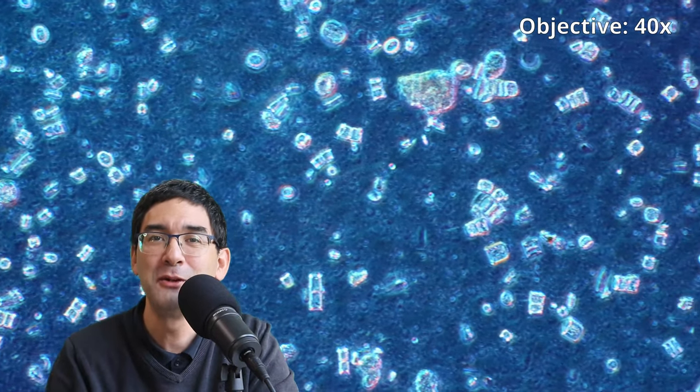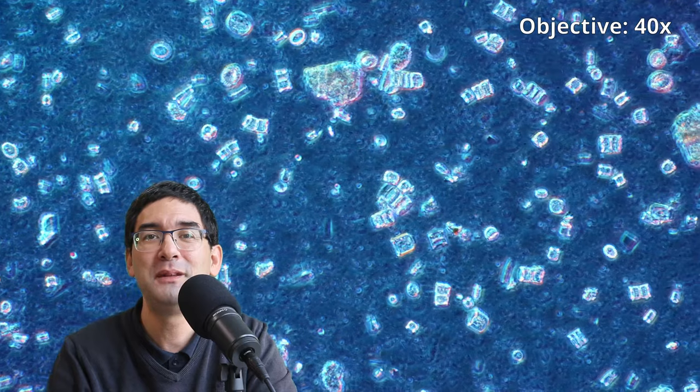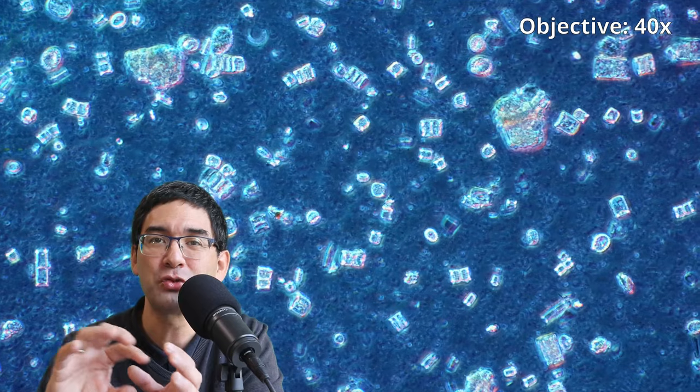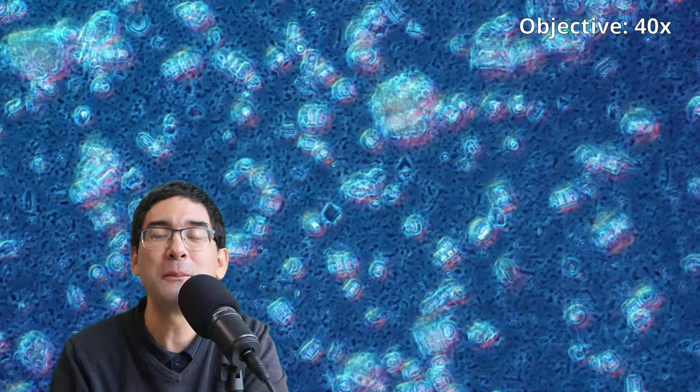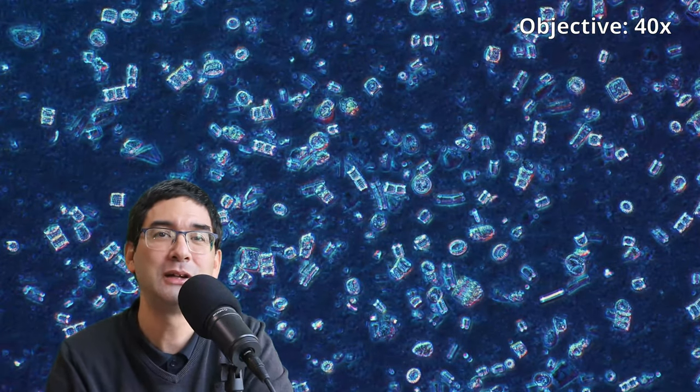So this here beautiful picture again is using phase contrast microscopy, which allows you to see that the diatom frustules are bright on a darker background. So you can use different microscopic techniques to experiment around here a little bit.